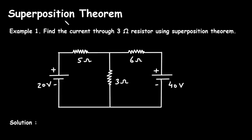In this video, we will see an example on superposition theorem. The question is: find the current through the 3 Ohm resistor using superposition theorem. In this circuit, we have to find the current through this 3 Ohm resistor by using superposition theorem.